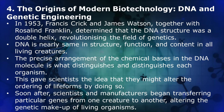The Origin of Modern Biotechnology — DNA and Genetic Engineering: In 1953, Francis Crick and James Watson, together with Rosalind Franklin, determined that the DNA structure was a double helix, revolutionizing the field of genetics. DNA is nearly the same in structure, function, and content in all living creatures. The precise arrangement of the chemical bases in the DNA molecule is what distinguishes each organism. This gave scientists the idea that they might alter the ordering of life forms. Soon after, scientists and manufacturers began transferring particular genes from one creature to another, altering the genetic makeup of living organisms.